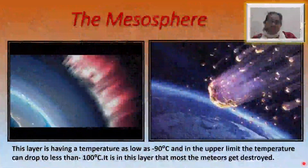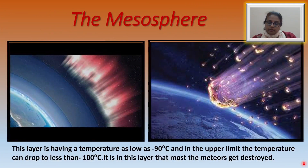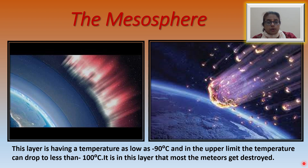Next, we come to the mesosphere. This layer is just above the stratopause and extends to a height of about 80 kilometers. Here, the temperature is as low as minus 90 degrees centigrade, and at the upper limit, it can drop to minus 100 degrees centigrade. It is in this layer that all meteors get destroyed.